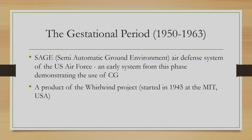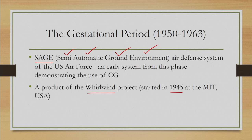In that phase, one system was developed called SAGE, which stands for Semi-Automatic Ground Environment. It was developed for the benefit of the US Air Force and was part of a bigger project called the Whirlwind project, which was started in 1945. The SAGE system is an early example from the gestational period demonstrating the use of computer graphics.